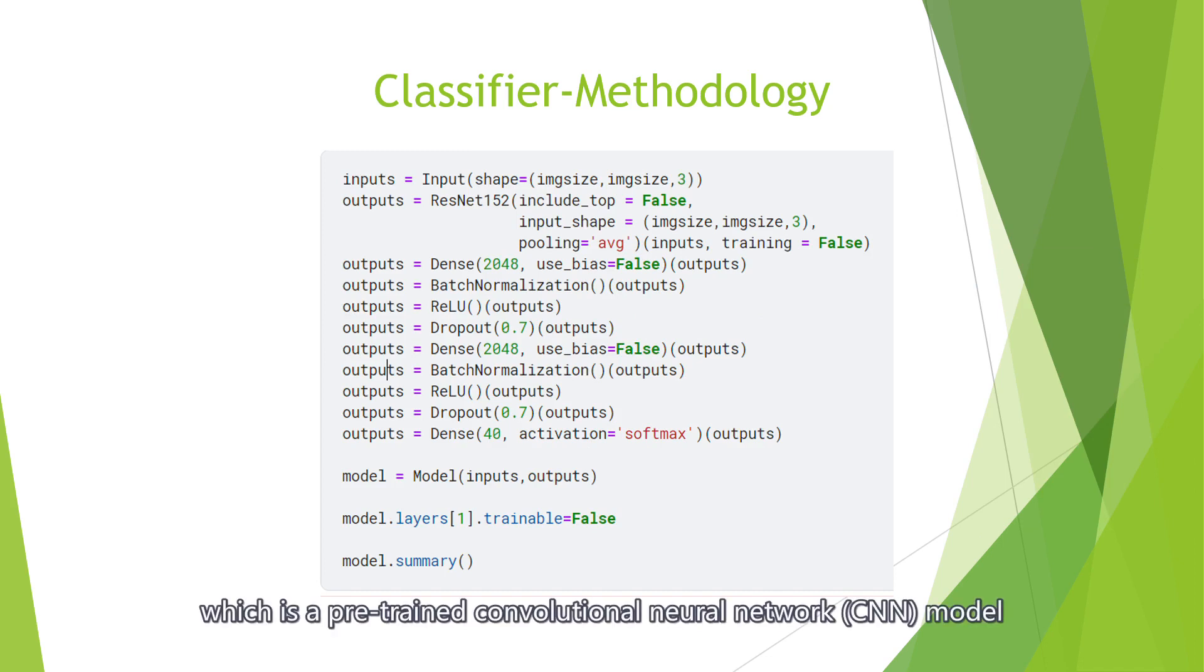ResNet-152 is a pre-trained convolutional neural network model that has a dense layer of 2048 neurons, batch normalization layer, and ReLU activation layer.